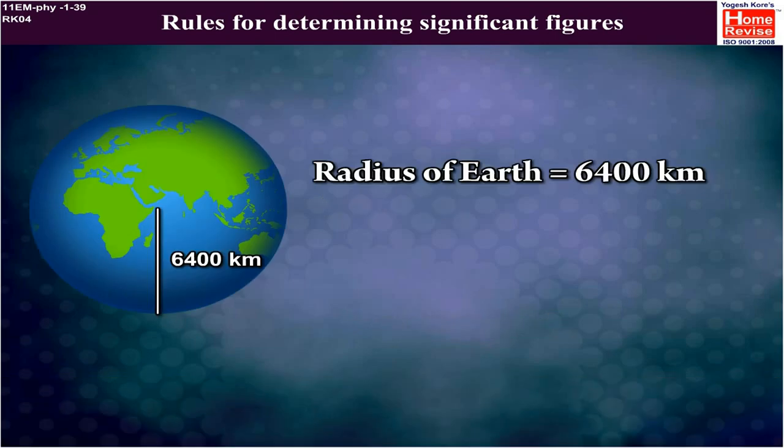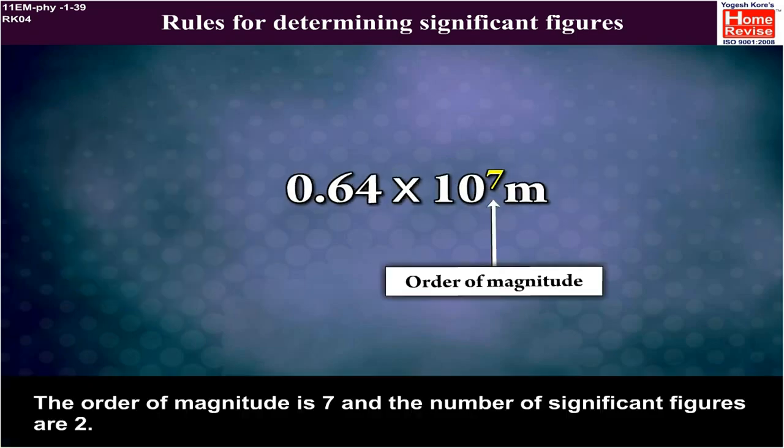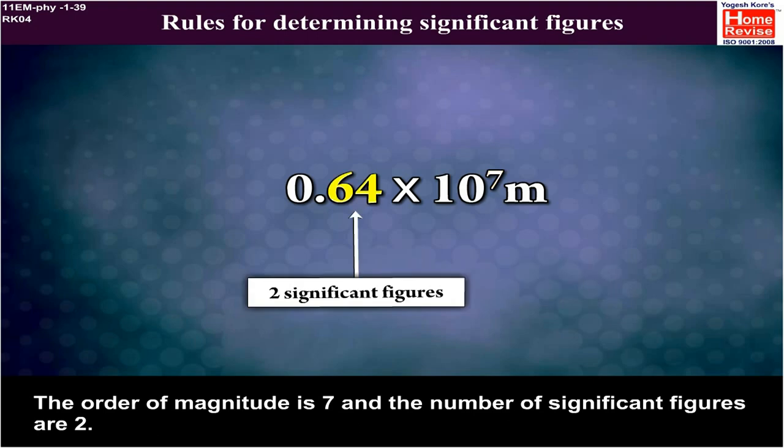First, radius of earth = 6400 km = 0.64 × 10⁷ m. The order of magnitude is 7 and the number of significant figures are 2.